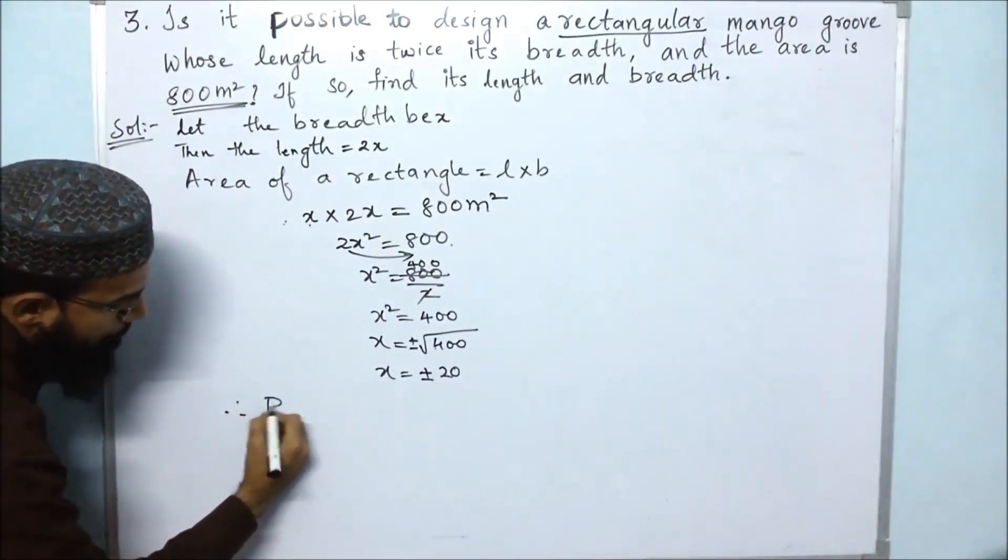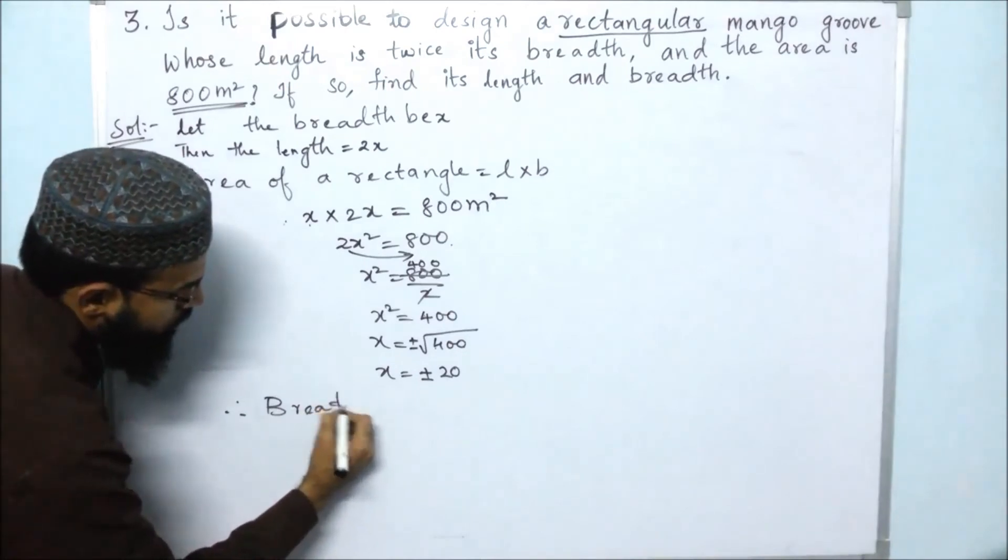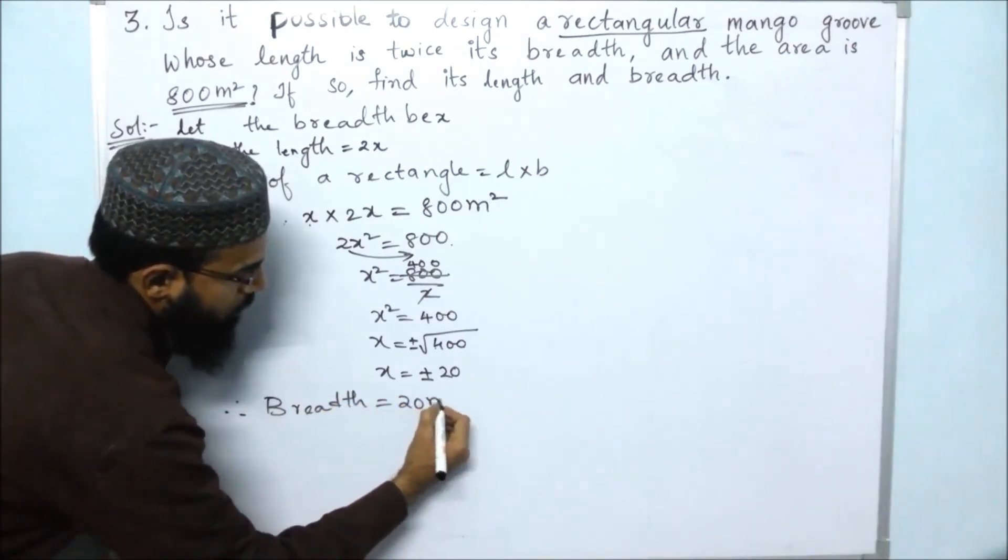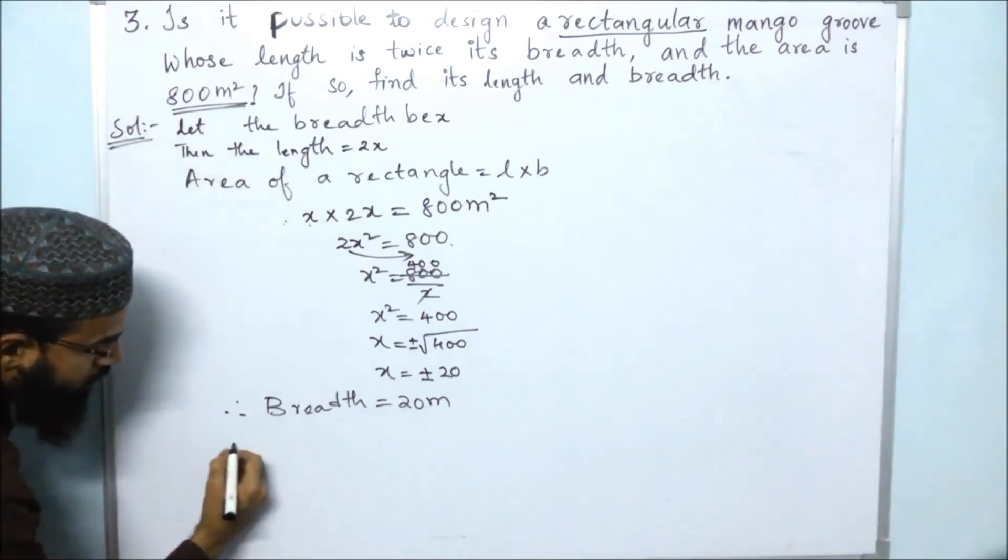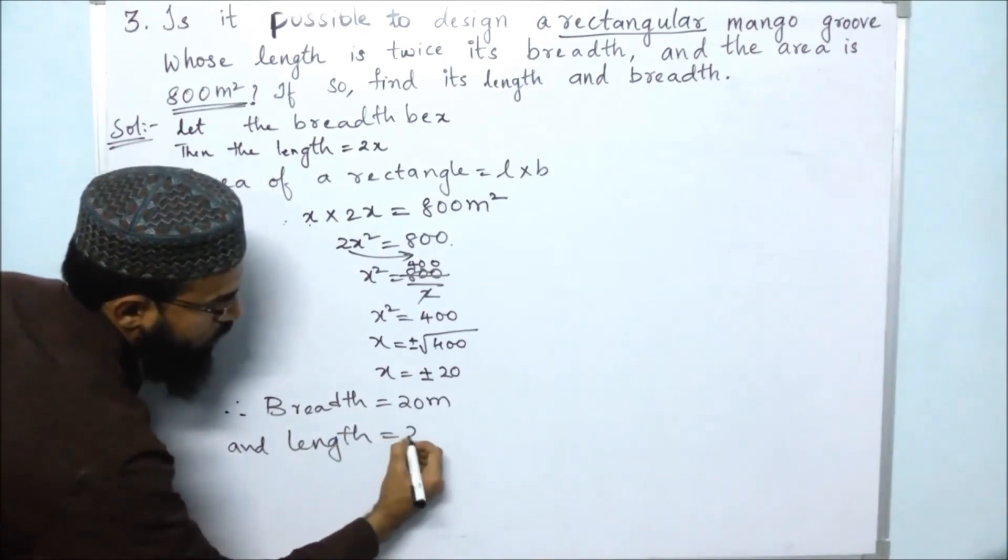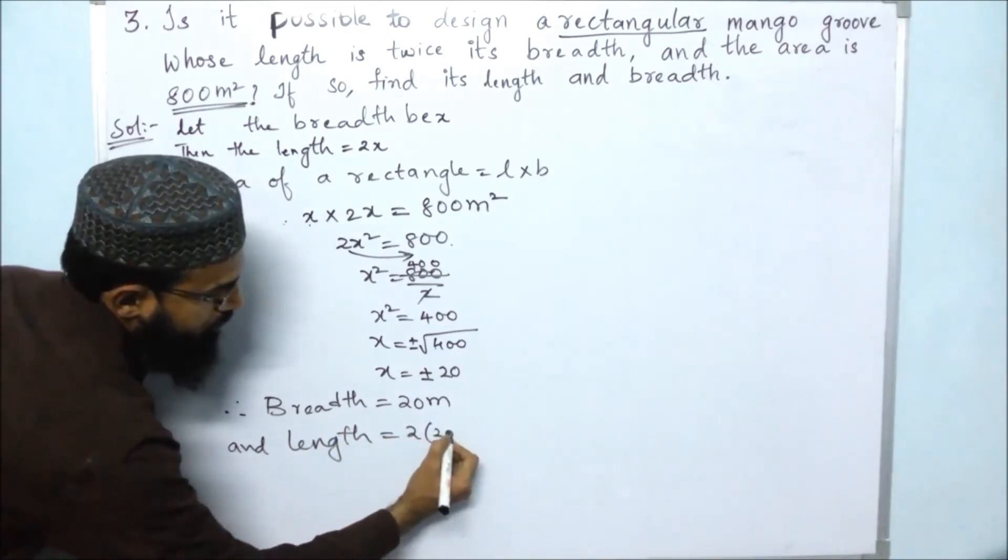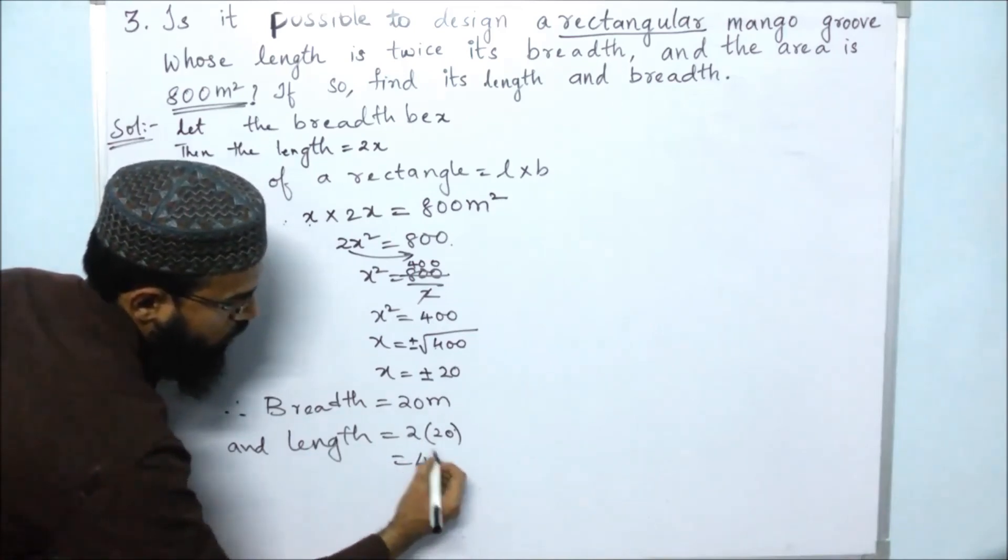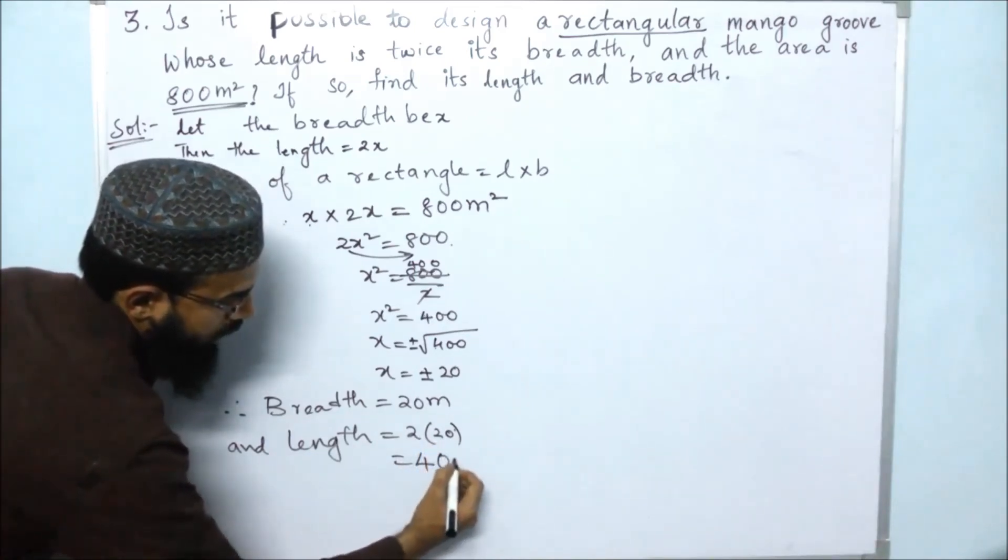Therefore, breadth is 20 meters and length is 2 into 20, which gives us 40 meters.